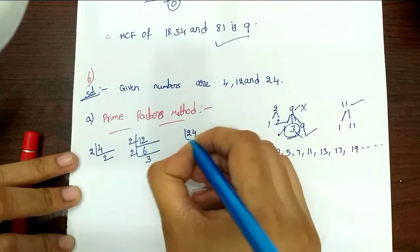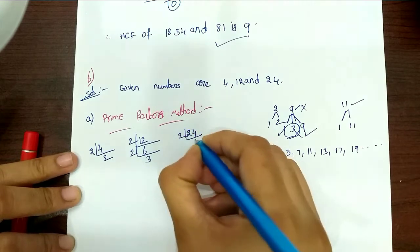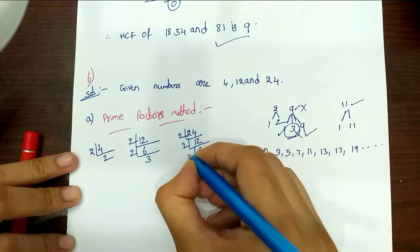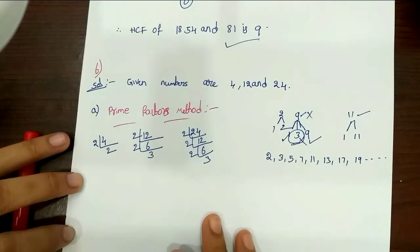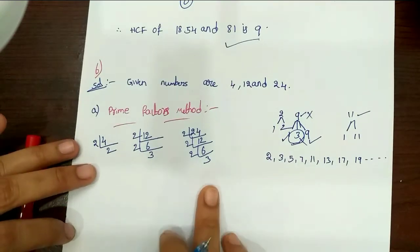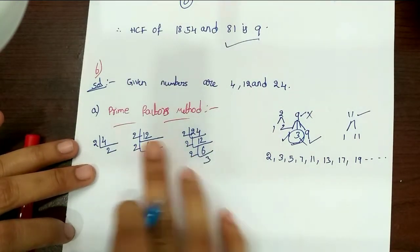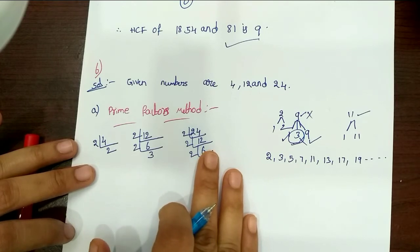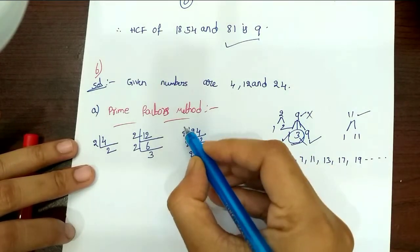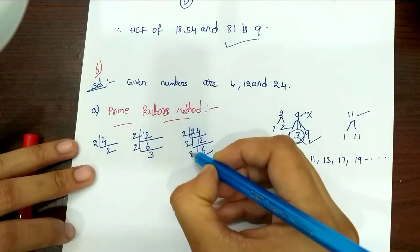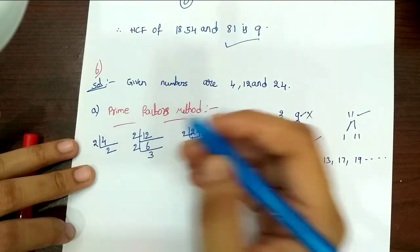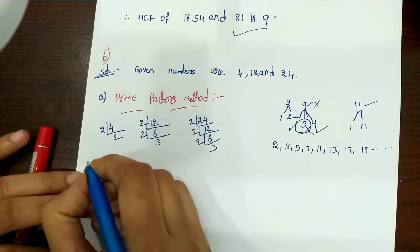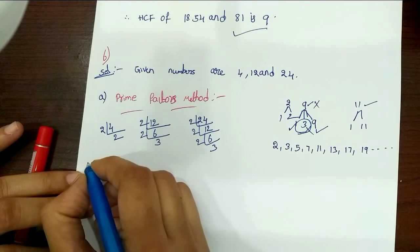2 into 12 is 24, 2 into 6 is 12, 2 into 3 is 6. So now we will do factors. Factors are the same.